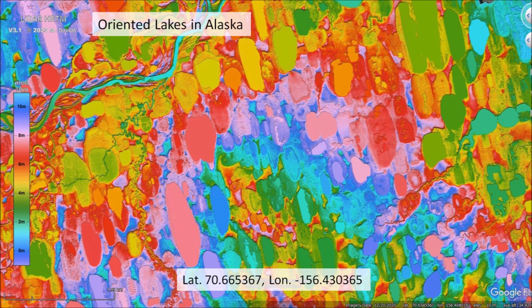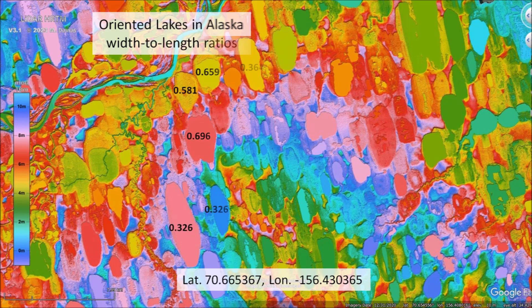Thermokarst lakes are normally oriented toward lower terrain because the water eventually drains into the ocean. In this image, I calculated the width-to-length ratios for several Alaskan lakes. This is difficult because the rims of the thermokarst lakes are irregular and not well defined like the Carolina bays. Looking at this image, it is evident that these lakes were not created by the same physical mechanisms as the Carolina bays.